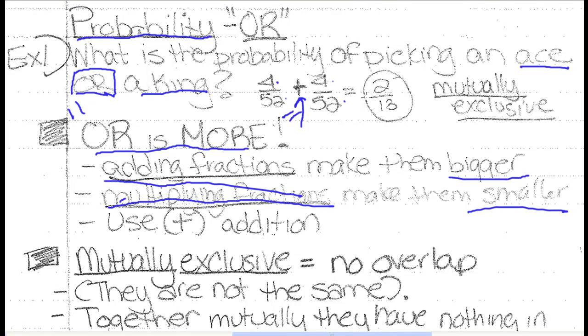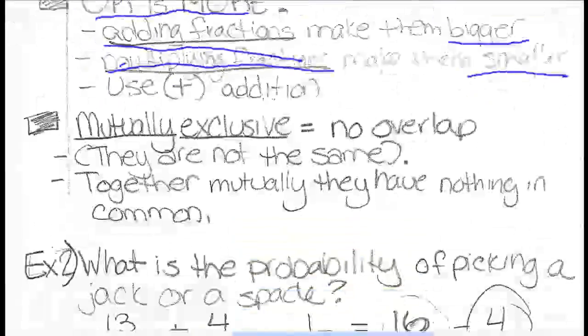Now picking an ace and picking a king are what we would call mutually exclusive events, which means that there's no overlap between the two categories. Put the two categories together. Do they have any elements that they share? Is there any ace slash hybrid king card in the deck? The answer is no. That makes them mutually exclusive. And that's a pretty good phrase to use in English as well.